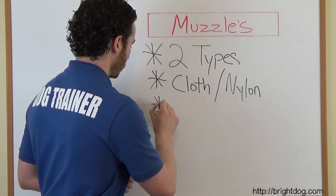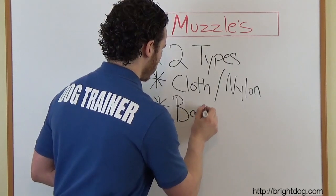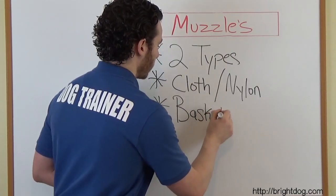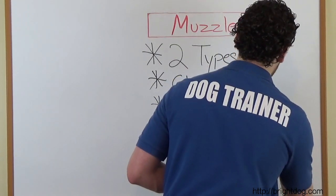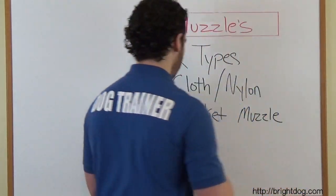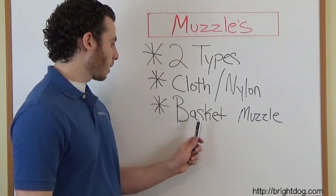Now if you need to use a muzzle for a longer period of time, you need to be able to take your dog for a walk, go to the dog park, or go to the veterinarian sometime where your dog needs a muzzle on for longer than five minutes, we use a basket muzzle.